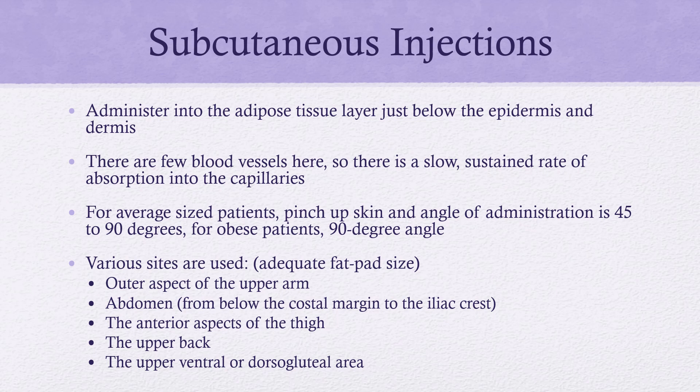Subcutaneous absorbs a little slower than the muscle, so we're going to educate our patient to rotate their sites. They'll find a favorite site, but we need to make sure we educate them to change sites so they don't damage the adipose tissue or leave bruising. Recommend going at least two inches from the previous site and rotating to different locations. Subcutaneous can only absorb about 1 mL of volume, so if we have more than 1.5 mLs to give, we may need to administer it as two separate injections.